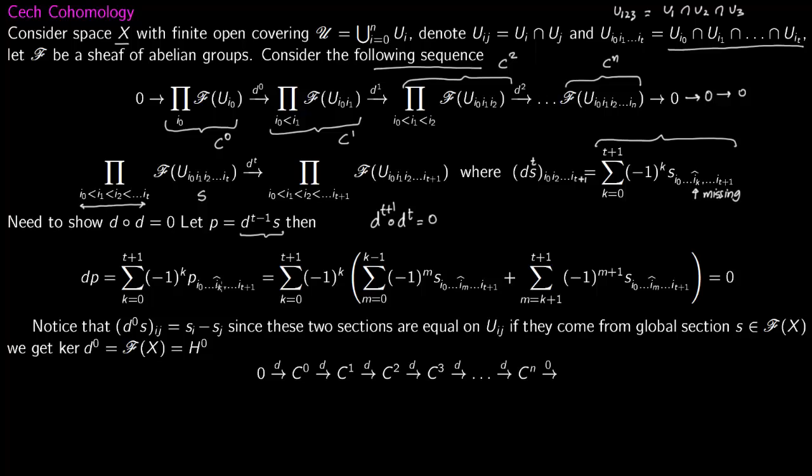When you have i_0 all the way to i_hat_k to i_hat_{t+1}, we have to split this into two parts. First, when you apply d^{t-1}, notice that this k index is missing. So you first sum up to k-1 and then you sum from k+1 to t+1. This thing is fine.